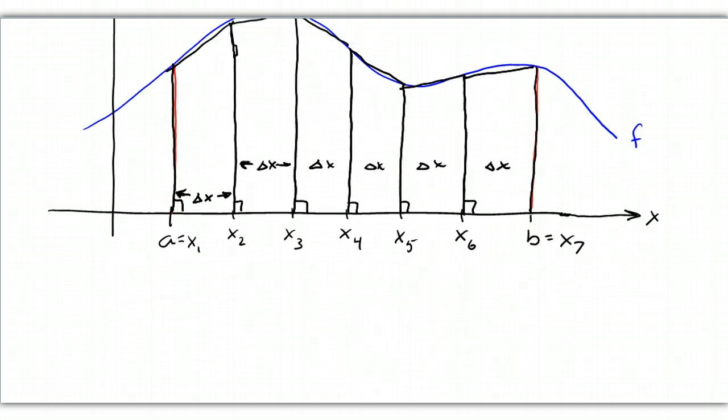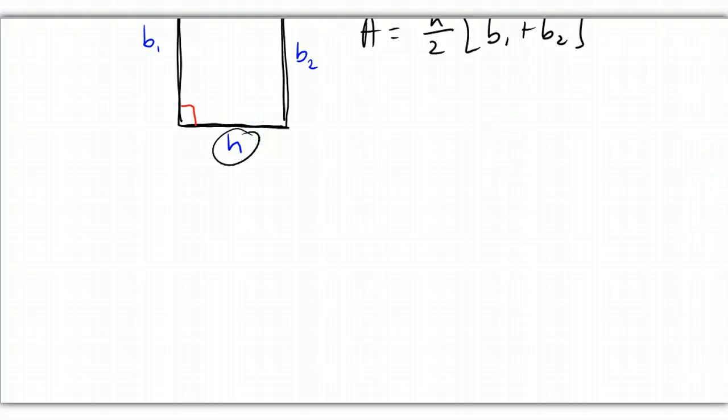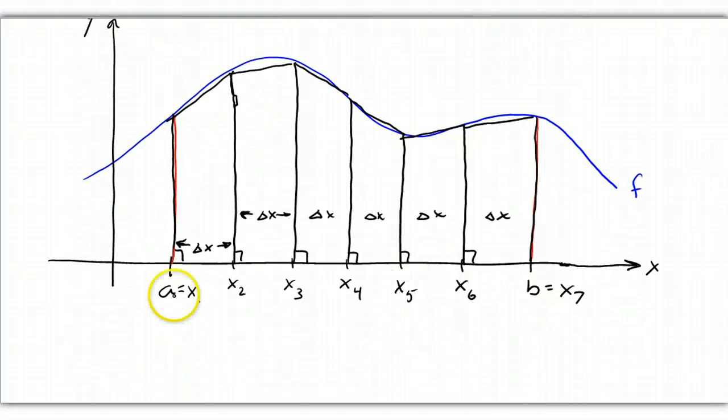And the area of the first trapezoid is going to be delta X over 2 because delta X is our H. And this is F of X1, and this is F of X2, F of X3, F of X4, F of X5, F of X6, and finally this height right here is F of X7.